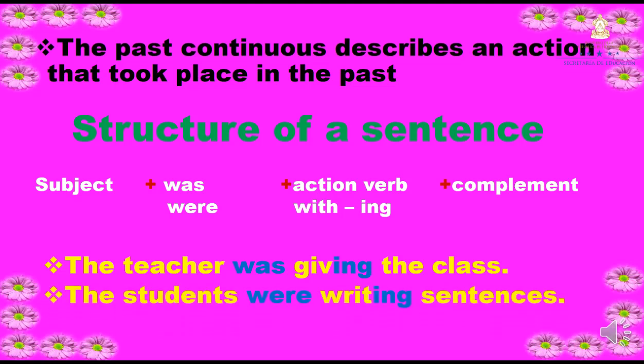The next: The students were writing sentences. Los estudiantes estaban escribiendo oraciones. The students forma el sujeto, were el verbo to be en pasado, writing el verbo con -ing y sentences el complemento. En la primera oración la tenemos con was porque estamos hablando en singular, y en la última, were porque estamos hablando en plural. Was para el singular, were para el plural.